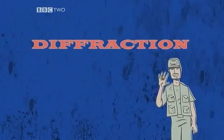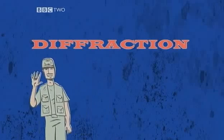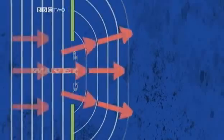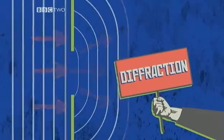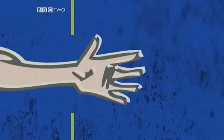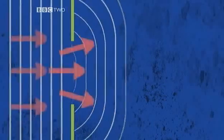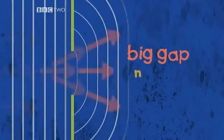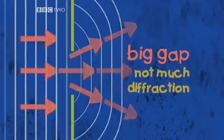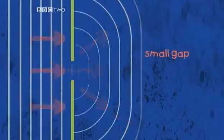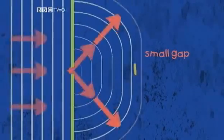The next wave behaviour we'll look at is called diffraction. Waves don't just travel past things — they bend round them a bit too. When a wave hits a gap it spreads on the other side once it's passed through. How much diffraction we get depends on how big the gap is compared to the wavelength. If the gap is much larger than the wavelength then there is not a lot of diffraction. If they're a similar size you get a lot of diffraction.